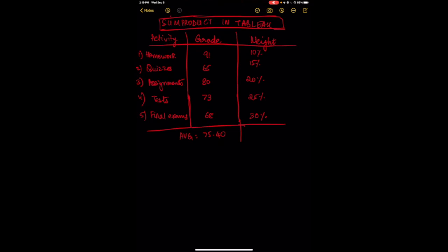Here we have a mini table which gives the various activities — homework, quizzes, assignments, tests, and final exams — on which a student is graded. For a particular subject, a student needs to complete each of these in order to receive a final grade. If we take the simple average of these numbers, we get an average of 75.4.